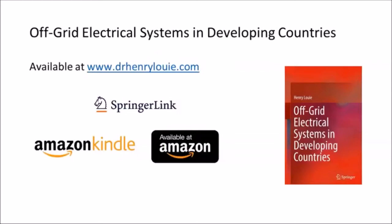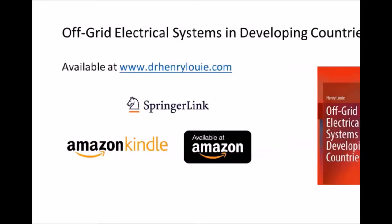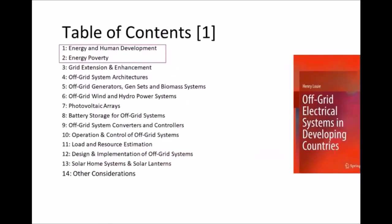Today's webinar is really drawn from my book, which was published this summer. You can find a link to it on my website, drhenrylouie.com. It's also available through Springer's website — that's the publisher. If your organization has access to Springer, you should be able to access it for free. You can also purchase it on Amazon via Kindle or as a hard copy, retailing for about $100 hard copy and about $80 electronically.